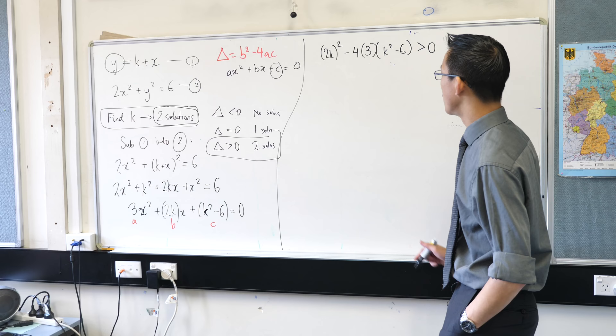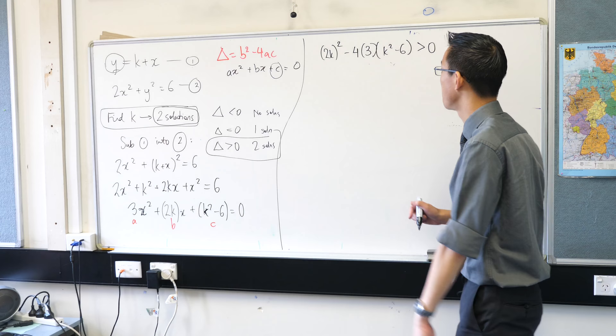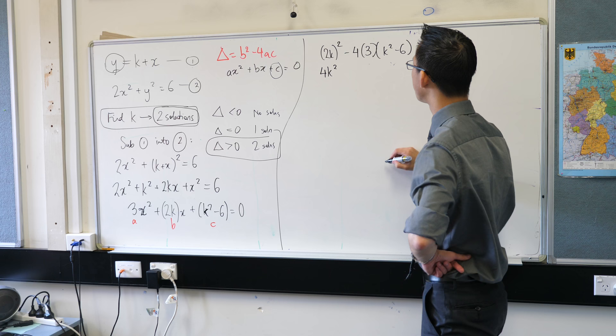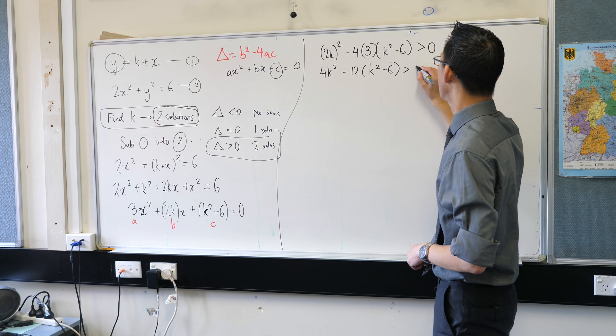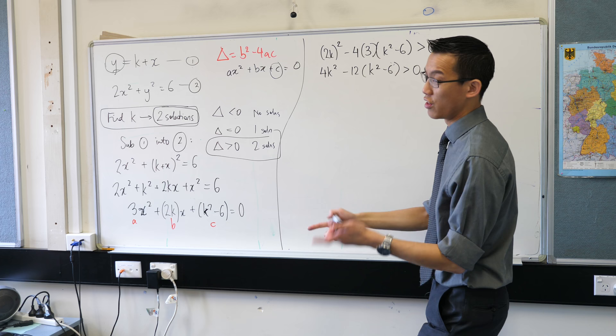In this case b squared is 2k all squared minus four lots of there's a and there's c and that's greater than zero. Now you're starting to realize why this question is three marks, because in solving this I've created another quadratic equation. So over here that's going to be 4k squared minus 12 lots of this, so I'm just trying to do the algebra here.